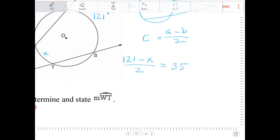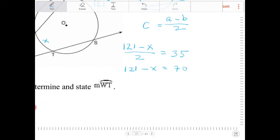Let's multiply both sides by 2. I get 121 minus X is equal to 70. Subtract both sides by 121, I end up with 51. So negative X is equal to negative 51, or X is equal to 51.